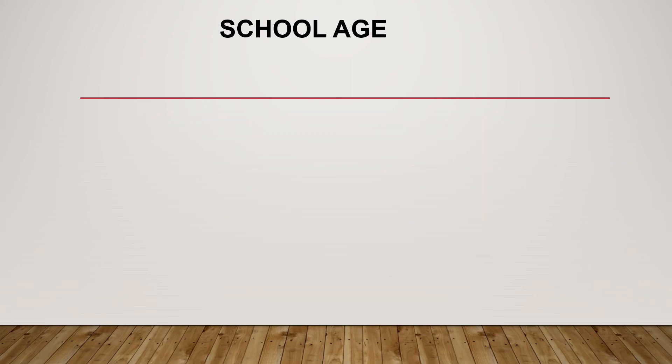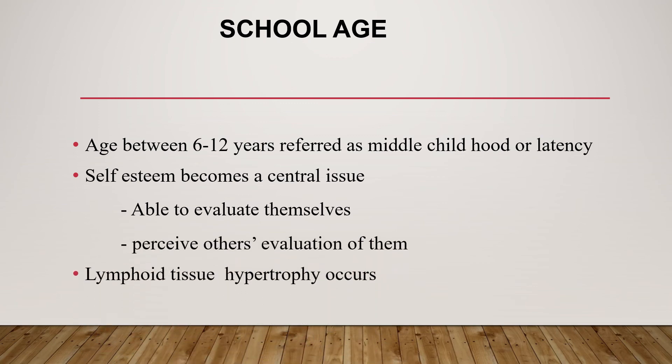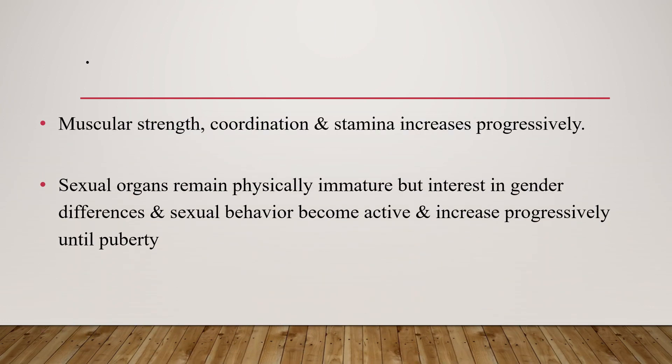Growth and development during school age, from six to ten years: this period is referred to as middle childhood or the latency period. Self-esteem becomes a central issue. Children are able to evaluate themselves and perceive others' evaluations of them. Lymphoid tissue hypertrophy occurs and snoring may occur more frequently. Muscular strength, coordination, and stamina increase progressively. Sexual organs remain immature but interest in gender differences and sexual behavior increases progressively until puberty.